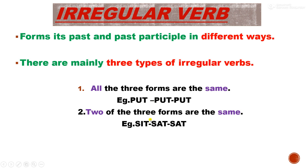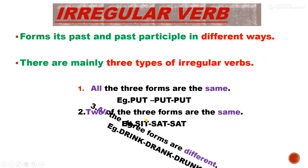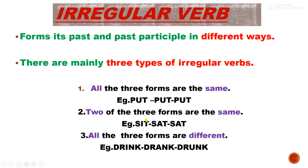The second type of change in irregular verbs is where two forms are the same. For example: sit, sat, sat. Here the present form is different, but the past and past participle are the same.